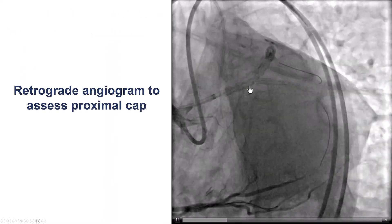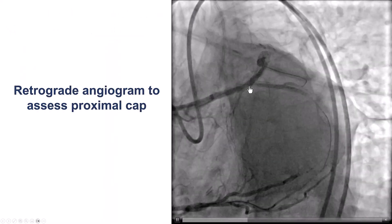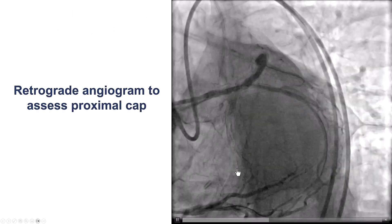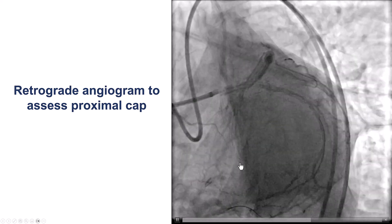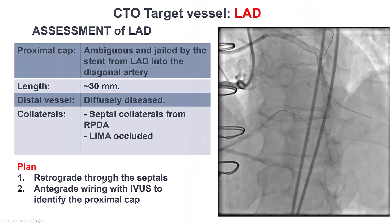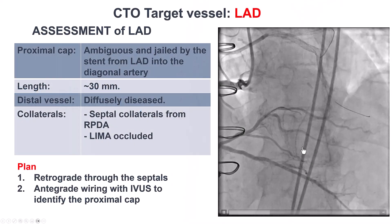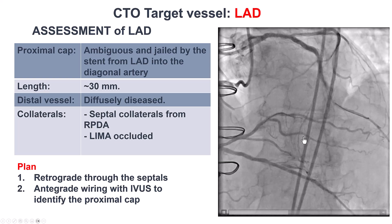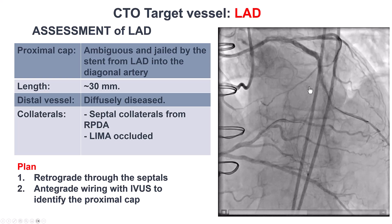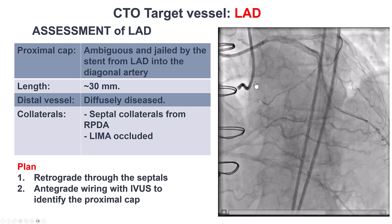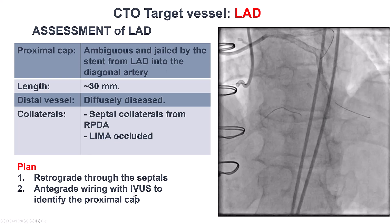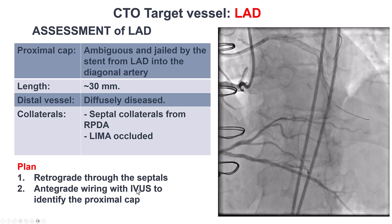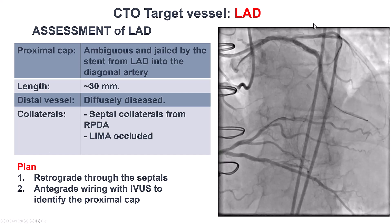Given the proximal cap ambiguity, we decided to start with the primary retrograde approach since we had nice septal collaterals and the cap was ambiguous. If that failed, the plan was to do antegrade wiring using IVUS.